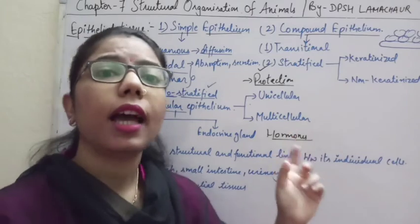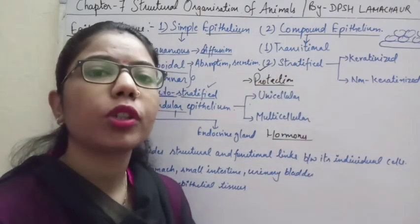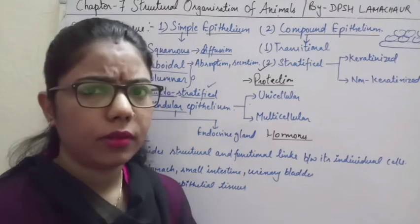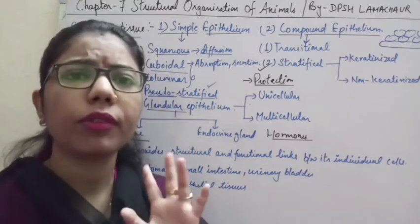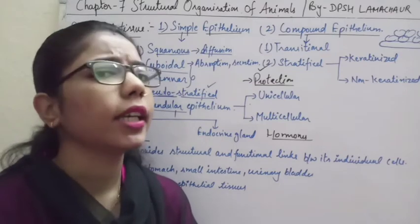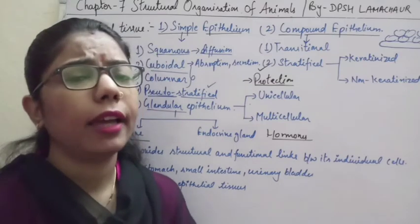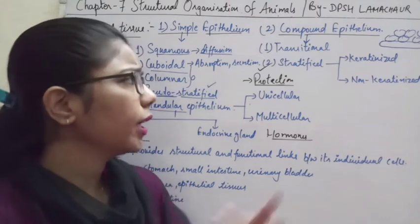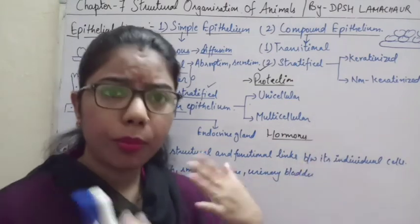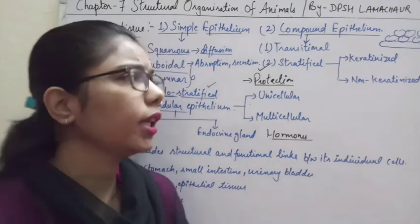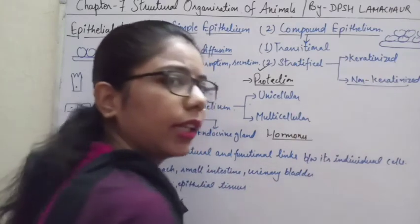Non-keratinized stratified epithelium provides less protection than keratinized but still has multiple layers of cells. An example is the esophagus — since food passes through it, having a stratified (though non-keratinized) lining provides protection against destruction from a single-layer arrangement.